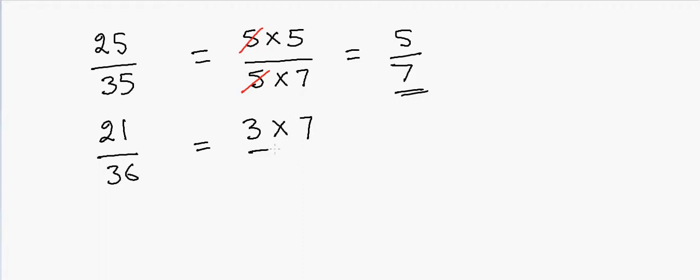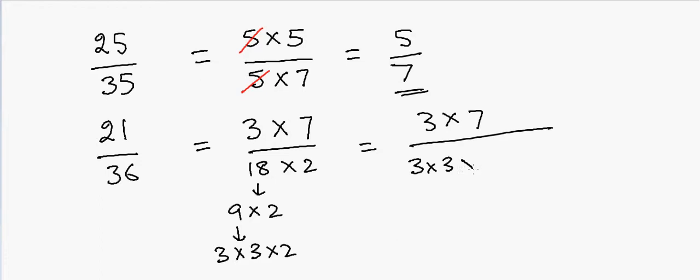So that is 21. Now if you look at 36, it is an even number so it is divisible by 2. So it will be first 18 by 2, and 18 I can further divide into 9 into 2, and 9 I can further say 3 into 3. So that will be equal to 3 multiply by 7, and then 3 multiply by 3 multiply by 2 multiply by 2.